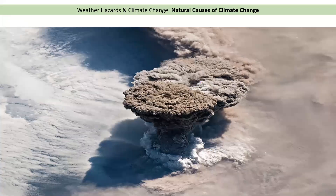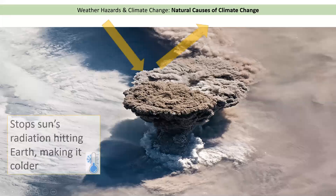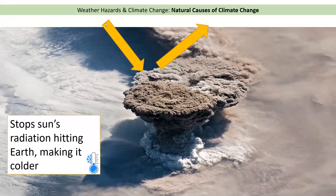Here is a picture taken from the International Space Station showing a huge ash cloud coming out of a volcano. What happens is the sun's rays will hit that ash cloud, reflect back into space, and so on Earth, below the ash clouds, it will be much, much colder.